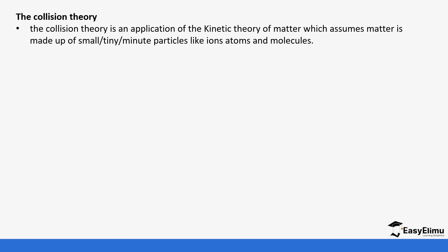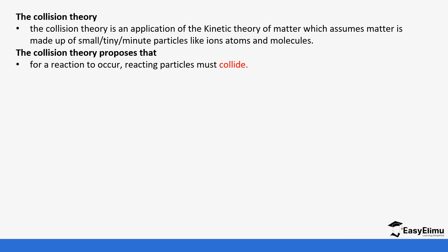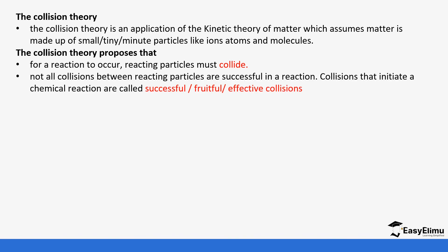The kinetic theory says that these particles are in random constant motion. The collision theory proposes that for a reaction to occur, particles must collide. Not all collisions are successful or will bring a reaction — only specific collisions bring a chemical reaction, and we say those are successful collisions. We need successful collisions for a chemical reaction to occur.